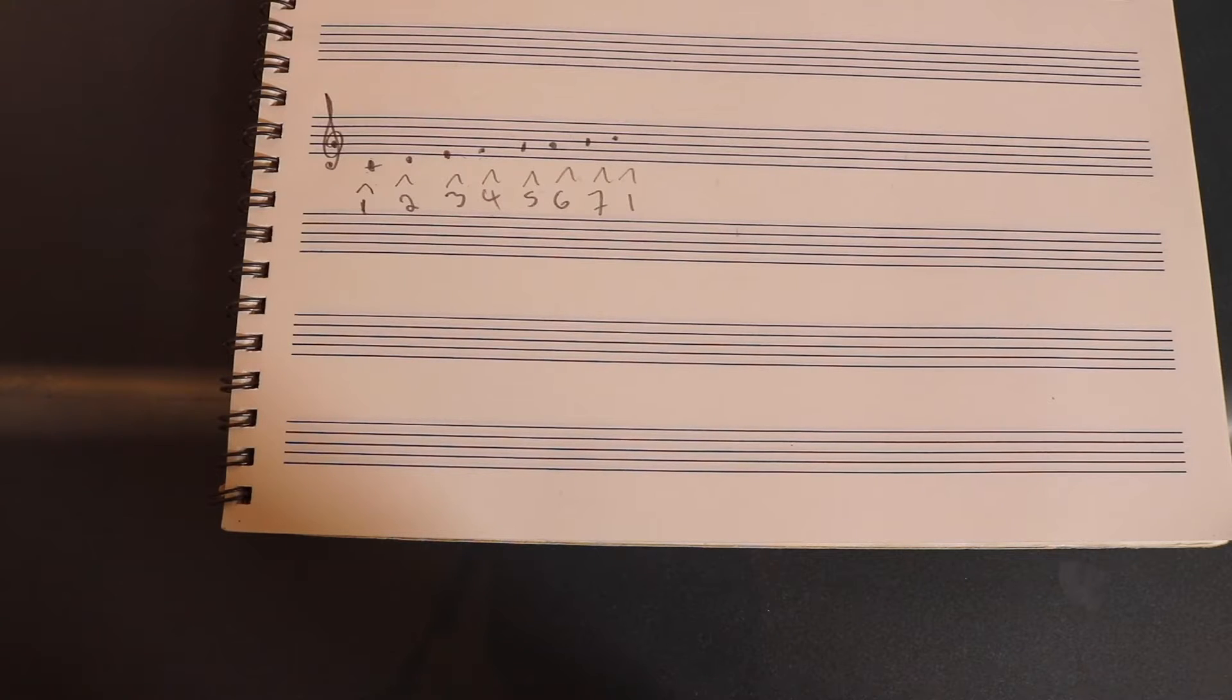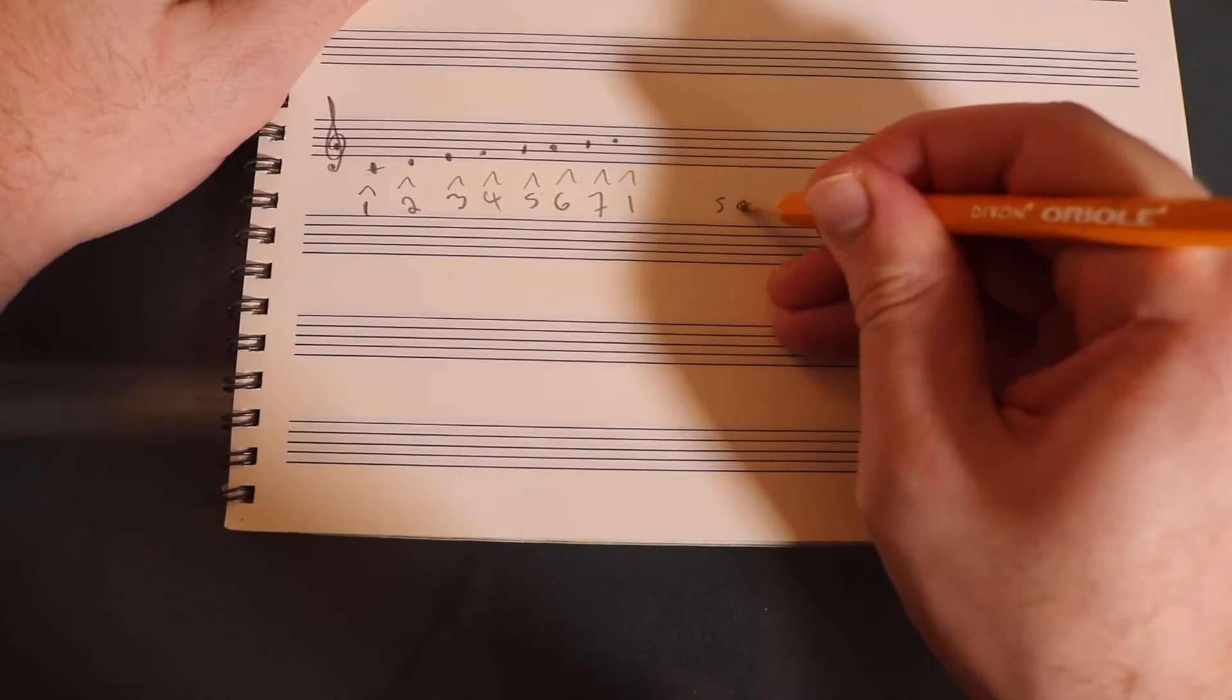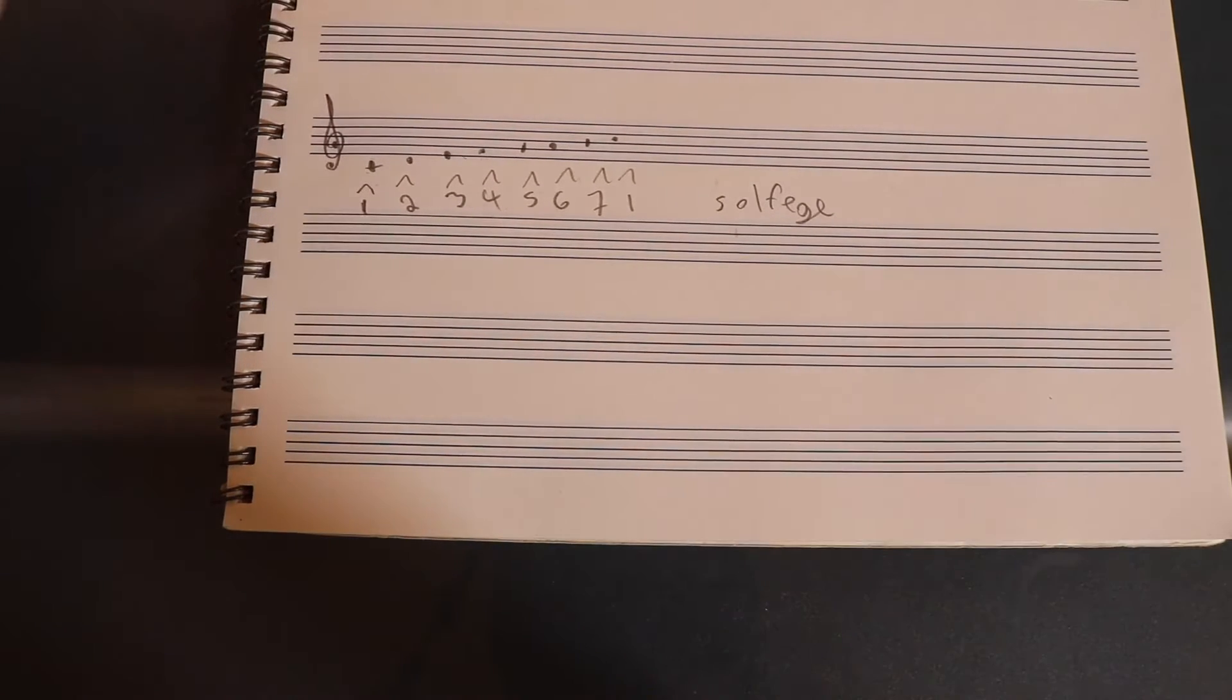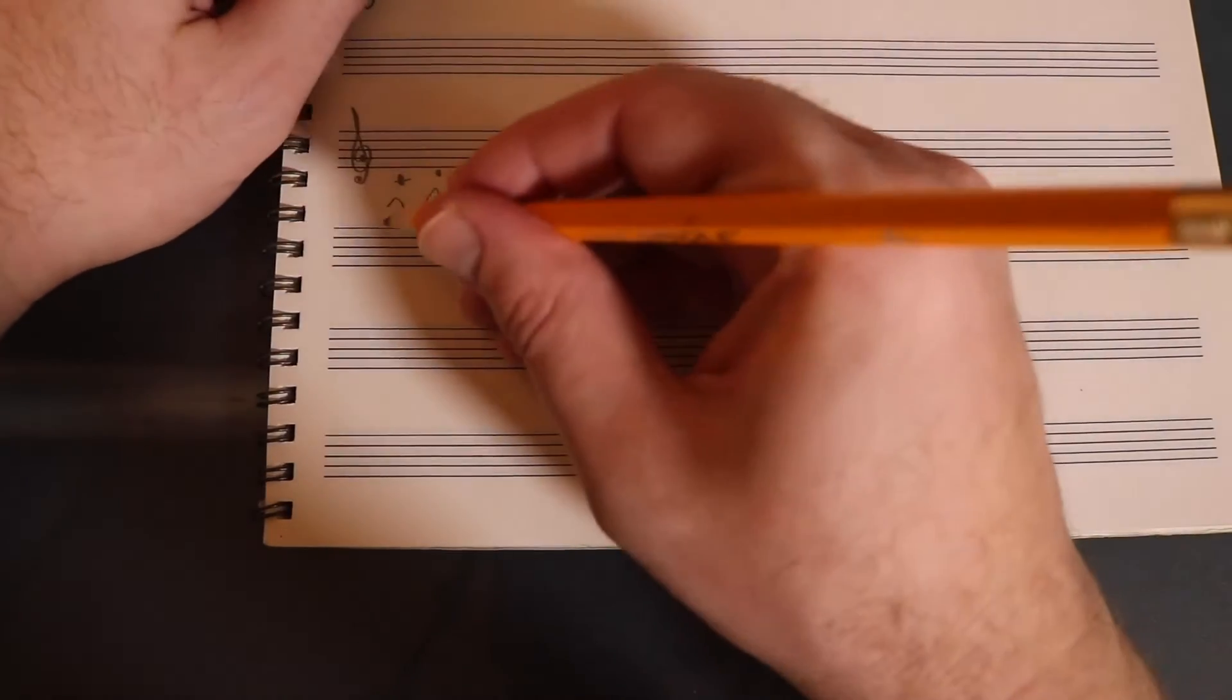The next one which probably is really familiar to you especially if you've ever seen the movie The Sound of Music is called solfege. Solfege is this: Do, Re, Mi, Fa, Sol, La, Ti, Do. Sounds familiar. You know the song.